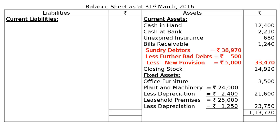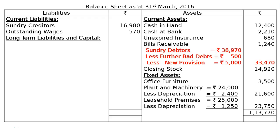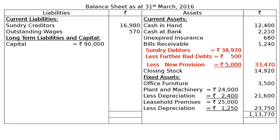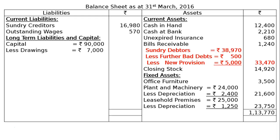On the liabilities side, current liabilities: sundry creditors rupees 16,980. Outstanding wages rupees 570 — being an adjustment, it is shown for the second time. Long-term liabilities and capital: capital rupees 90,000, less drawings rupees 7,000, add net profit rupees 13,220, giving a final column figure of rupees 96,220. Total liabilities side: rupees 1,13,770. This is the final answer.